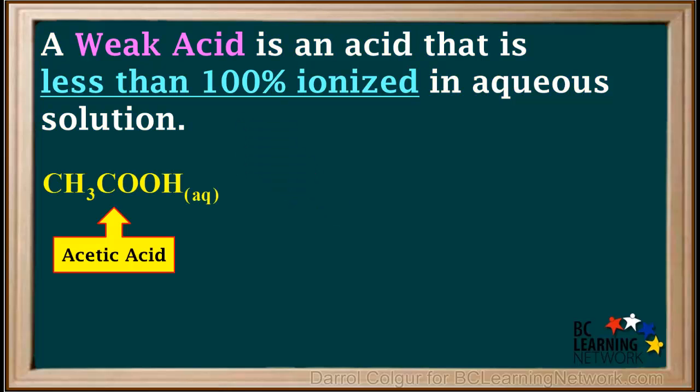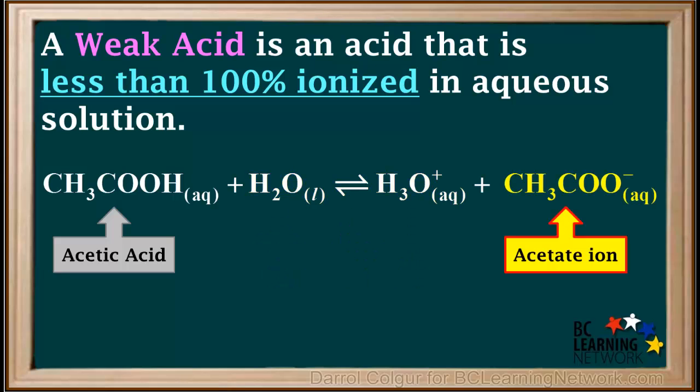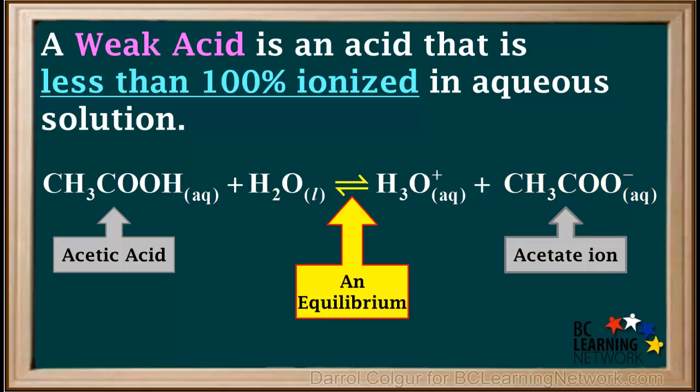An example of a weak acid is acetic acid, CH3COOH. It reacts with water to produce a hydronium ion and an acetate or ethanoate ion. Unlike strong acids which ionize to completion, weak acids exist as equilibrium mixtures, as shown by the double arrow.